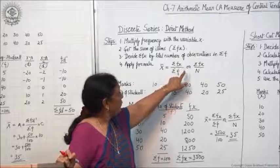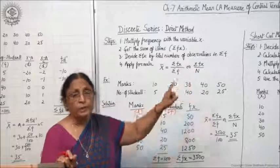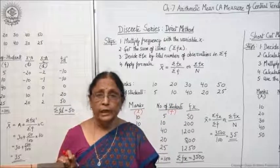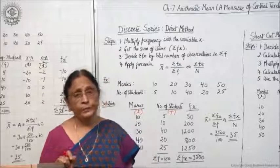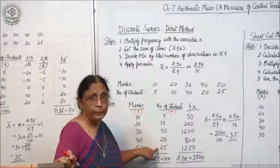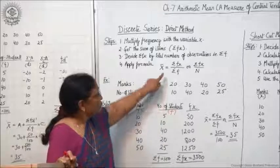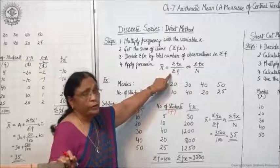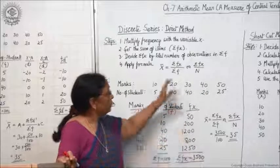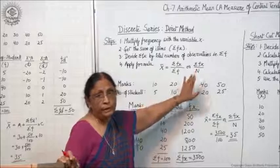Here you will see that I have written σfx / n — what does this mean? σf is the same as n. N stands for number of items, and frequency shows the number of times a particular value appears in the series. So the total of the f column will be the same as total number of items. So either you write σf or you write n — that means the same thing.